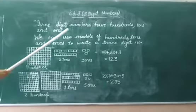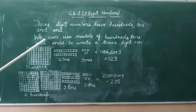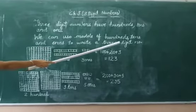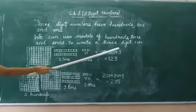3-digit numbers have hundreds, tens and ones. We can use models of hundreds, tens and ones to write a 3-digit number.